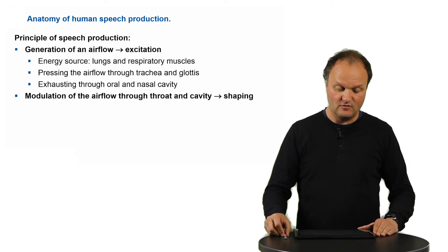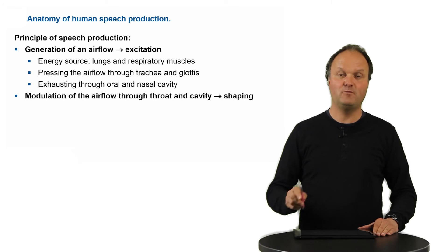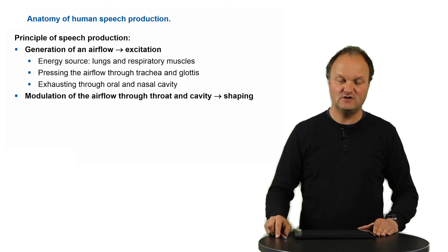And during this exhaustion process we modulate the air flow, that is we press information onto the air flow and this is called the shaping process. So the speech is produced in two steps, the production of the excitation signal and the shaping.